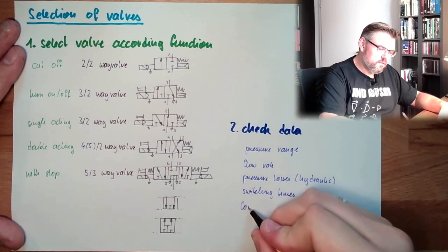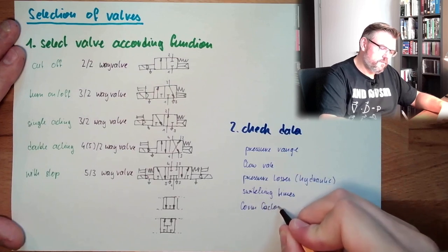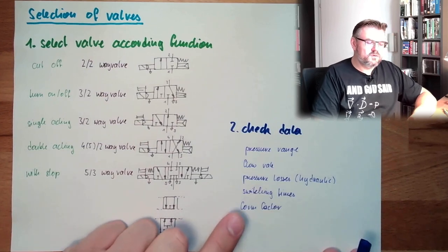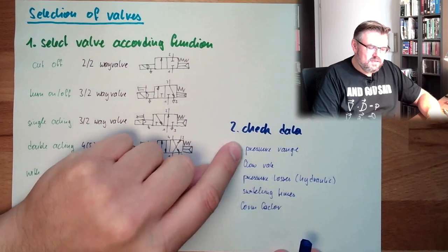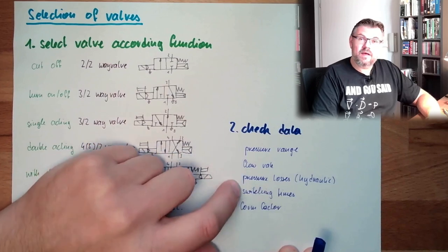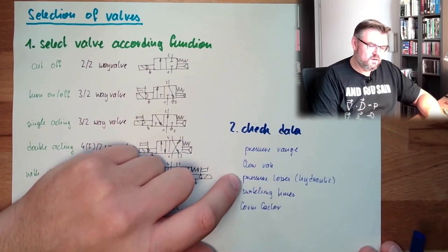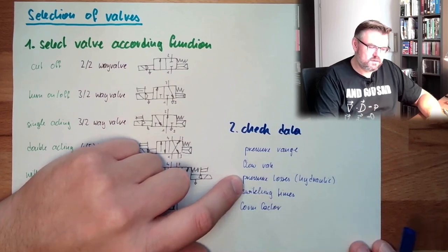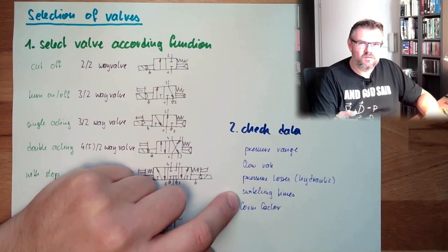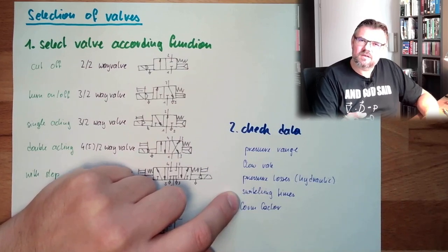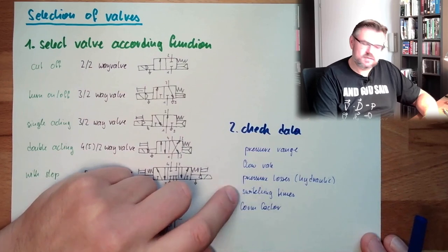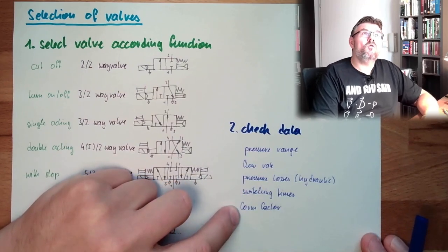Form factor is already something which goes to - this is mandatory: correct pressure range, necessary flow rate, and pressure losses which fit. This is simply mandatory, we cannot work around this. Switching times is usually not that important, you know. If something switches in 30 milliseconds or 35 milliseconds, if it comes to security or safety, maybe in this corner case this is important.